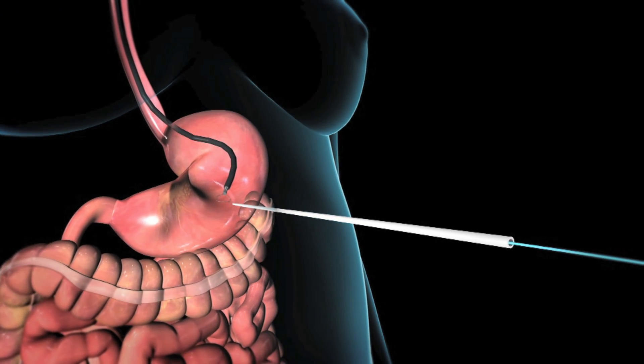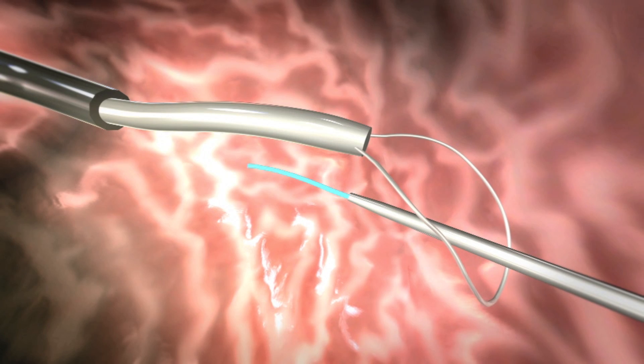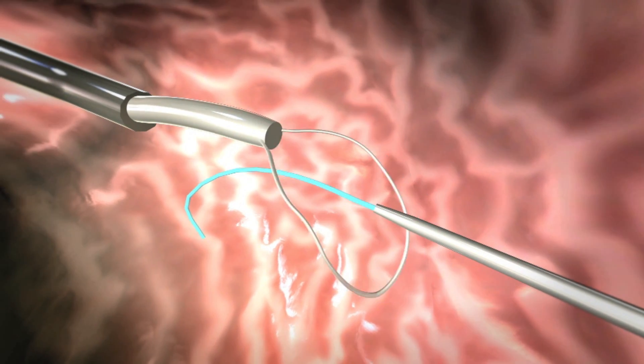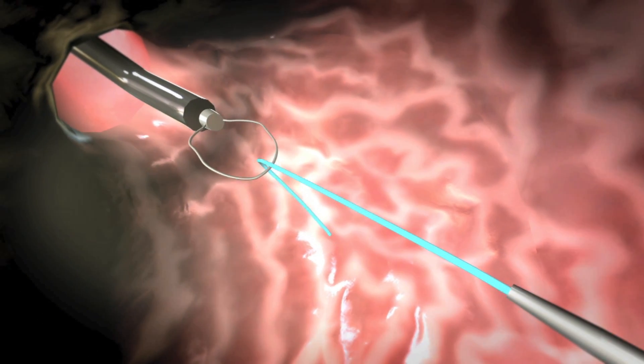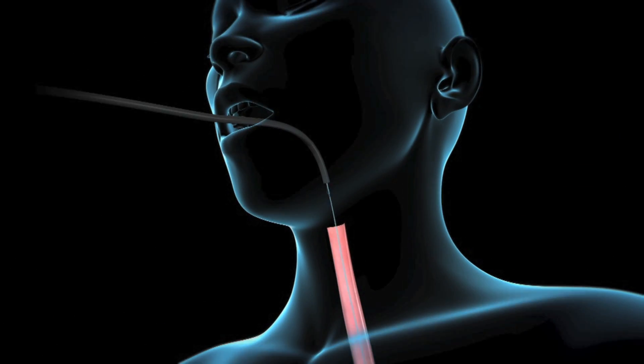Your doctor will then pass a thin wire through this needle into your stomach, grasp the wire with the snare, and pull both the endoscope and wire out through your mouth.